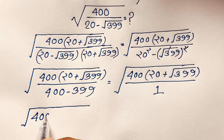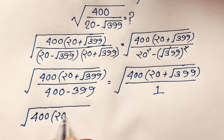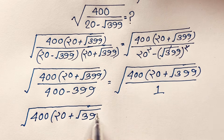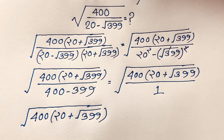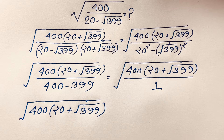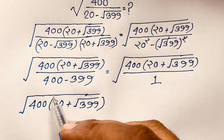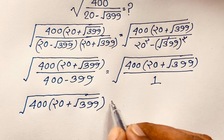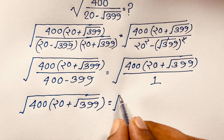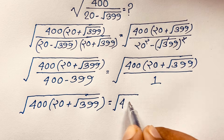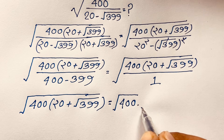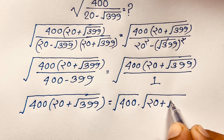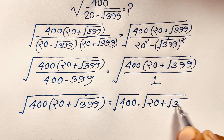Now, square root of (a times b) equals square root of a times square root of b. Applying this property here, this expression becomes square root of 400 times square root of (20 plus square root of 399). I separate this into square root of 400 and square root of (20 plus square root of 399).